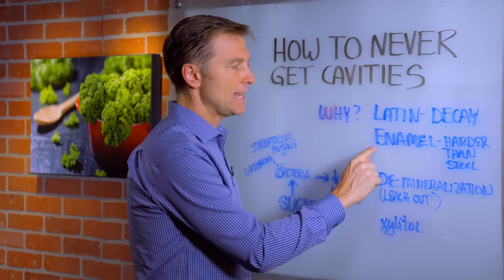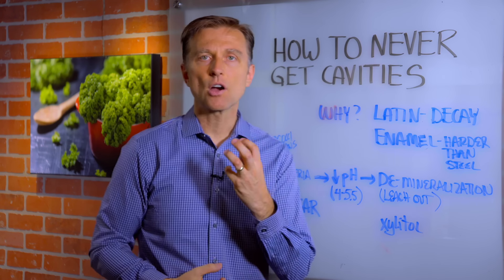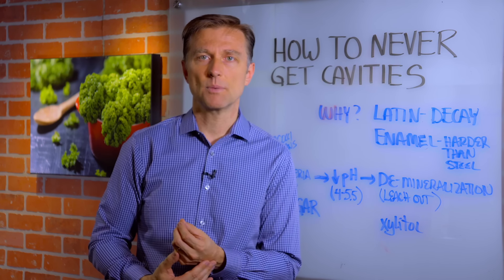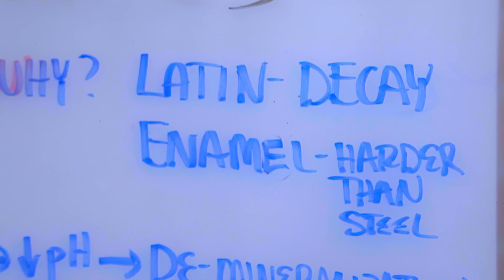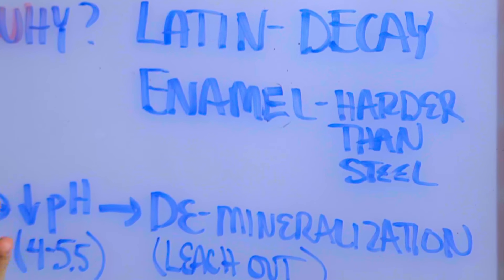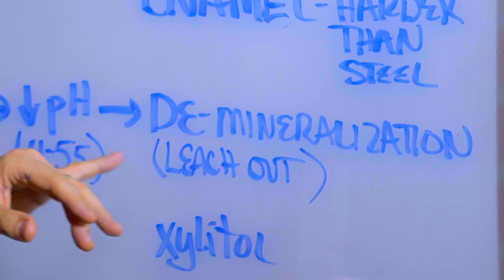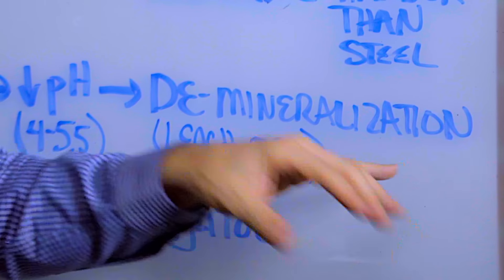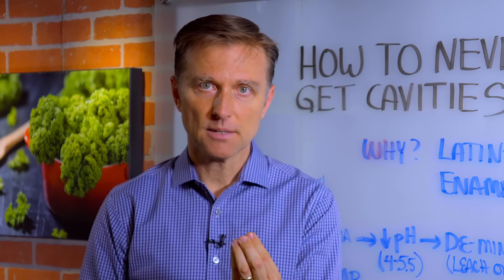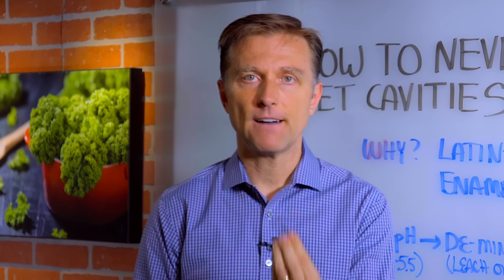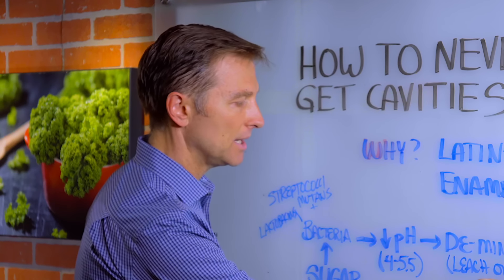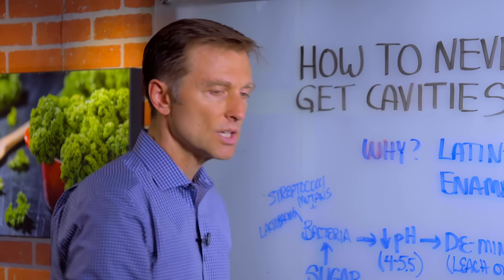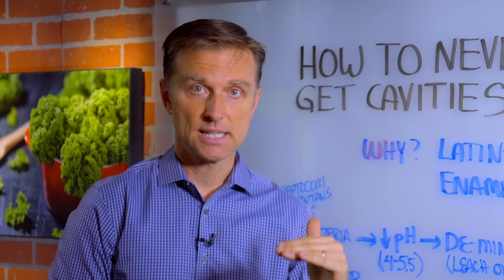If you think about the enamel around the tooth, it's stronger than steel. It would take something very, very powerful to disrupt that. So what's really happening to the enamel, which is bone tissue, is we're getting a demineralization — we're leaching out calcium and phosphorus. And the way that's happening is because the pH in the mouth is becoming very, very acidic.